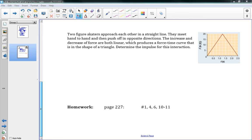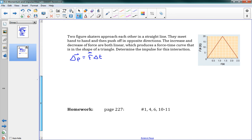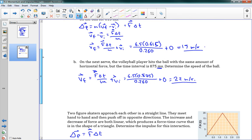So here we go. This last one says two figure skaters approach each other in a straight line. They meet hand-to-hand and then push off in opposite directions. The increase and decrease of force are both linear, which produces a force-time curve that is in the shape of a triangle. And we want to determine the impulse for this interaction. So you can see to the right here, we have a triangle-shaped graph. And what we're going to be doing is actually figuring out the impulse from a graph. We haven't done this yet, but we said that impulse, delta P here, is equal to F delta T. Right? This is what we said. We had this equation up here. So the impulse is equal to F delta T.